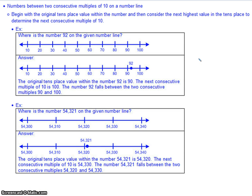We use these number lines to place numbers and give us a visual of their value. In our first example, where is 92 on the number line? We look at the 10s place — the 9 means 90 — so 92 falls between 90 and 100. Then we look at the 1s place: the 2 tells us whether it's closer to 90 or 100. Since it takes 10 ones to make another 10, halfway would be 5. Since 2 is less than halfway, it falls closer to 90.